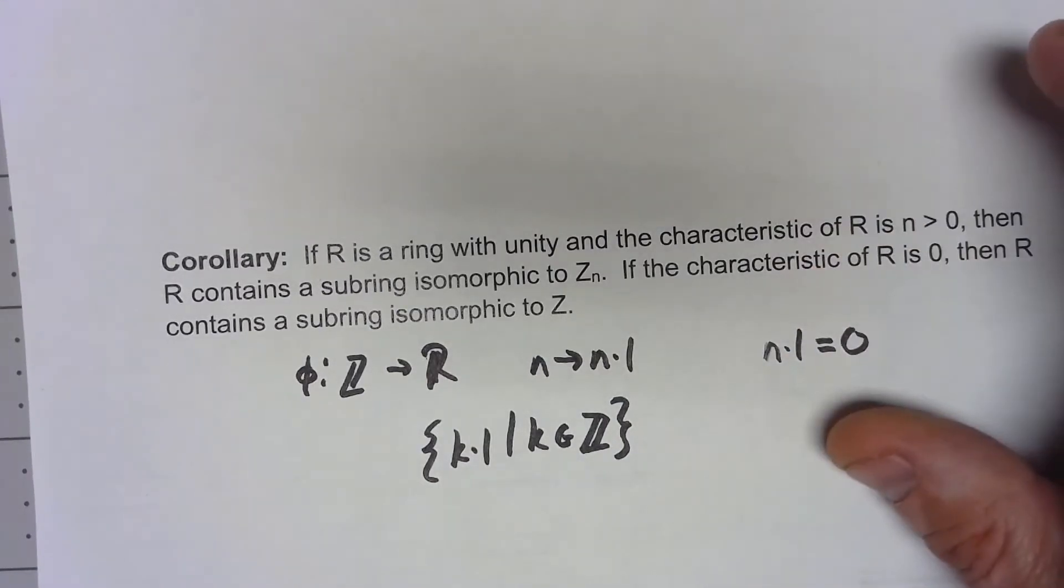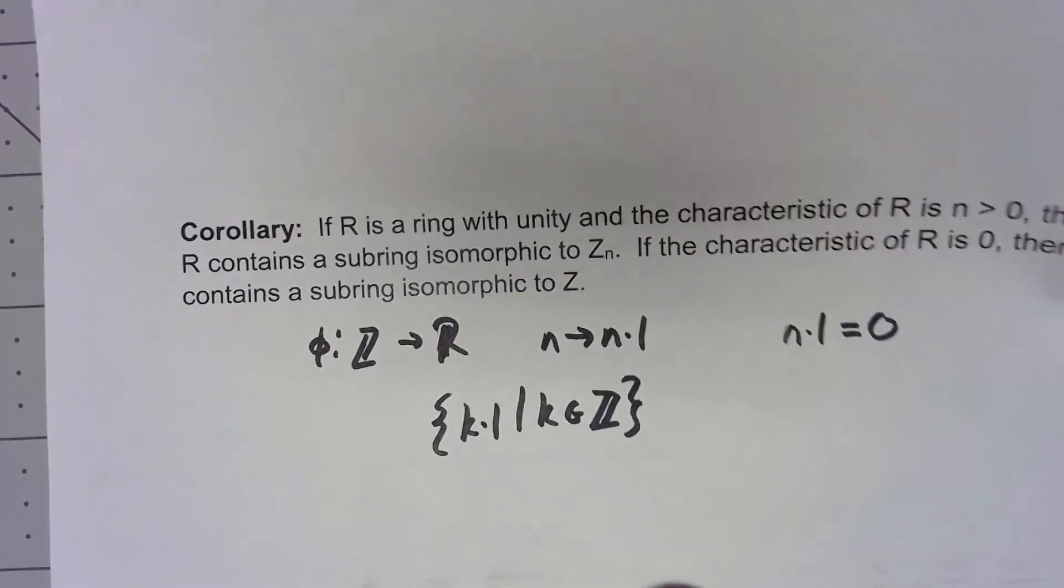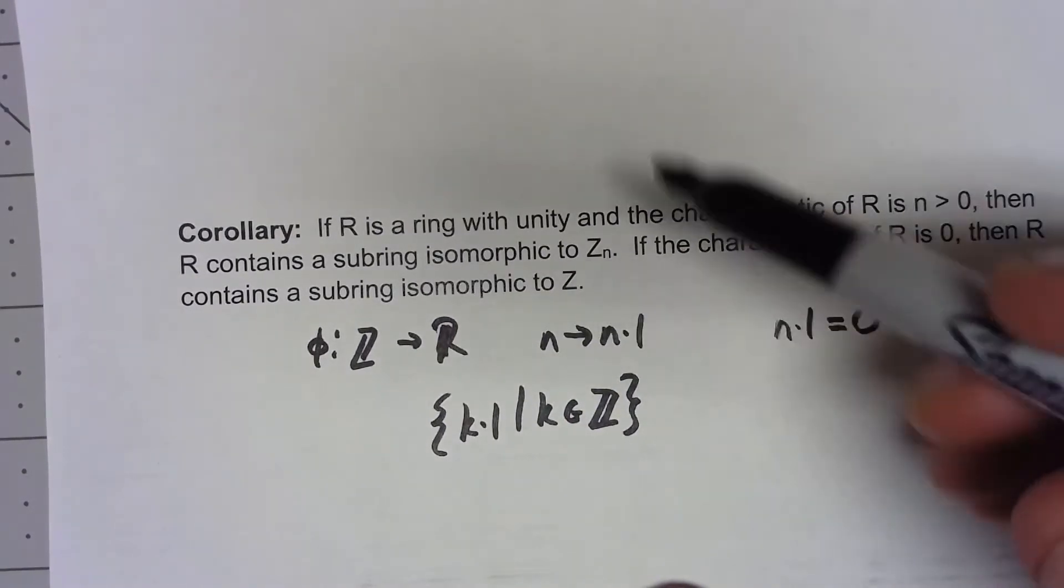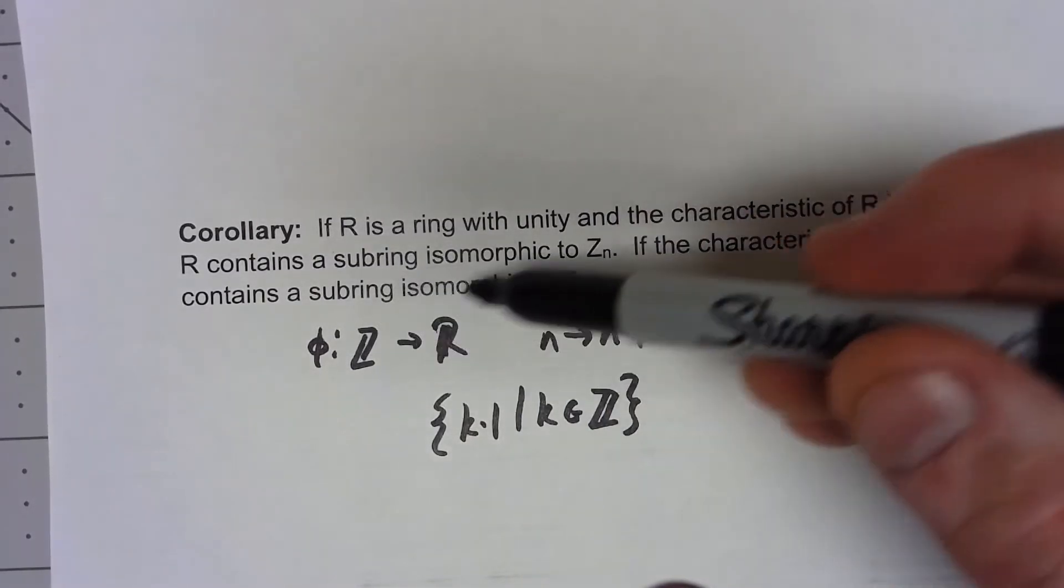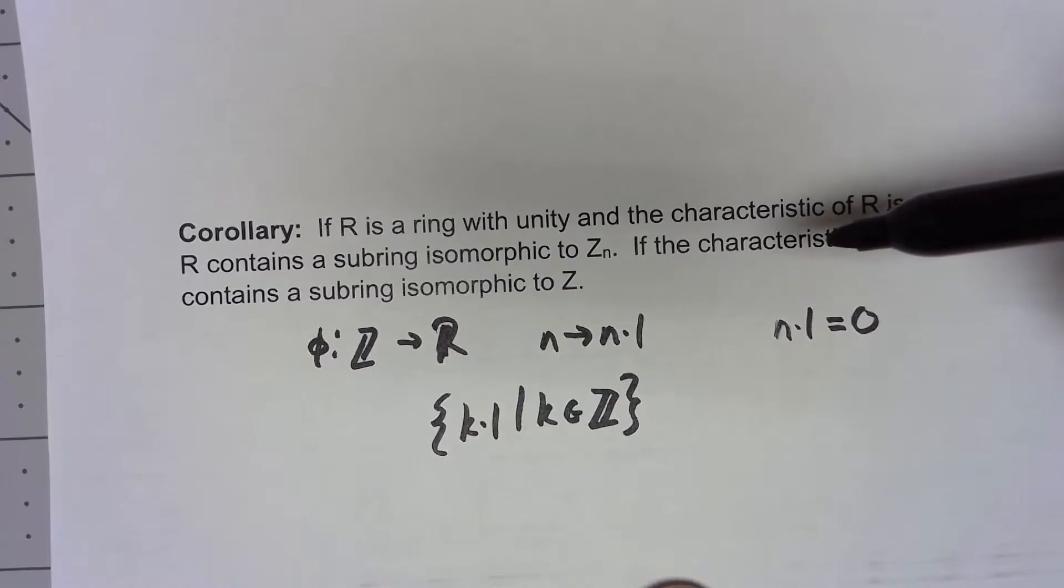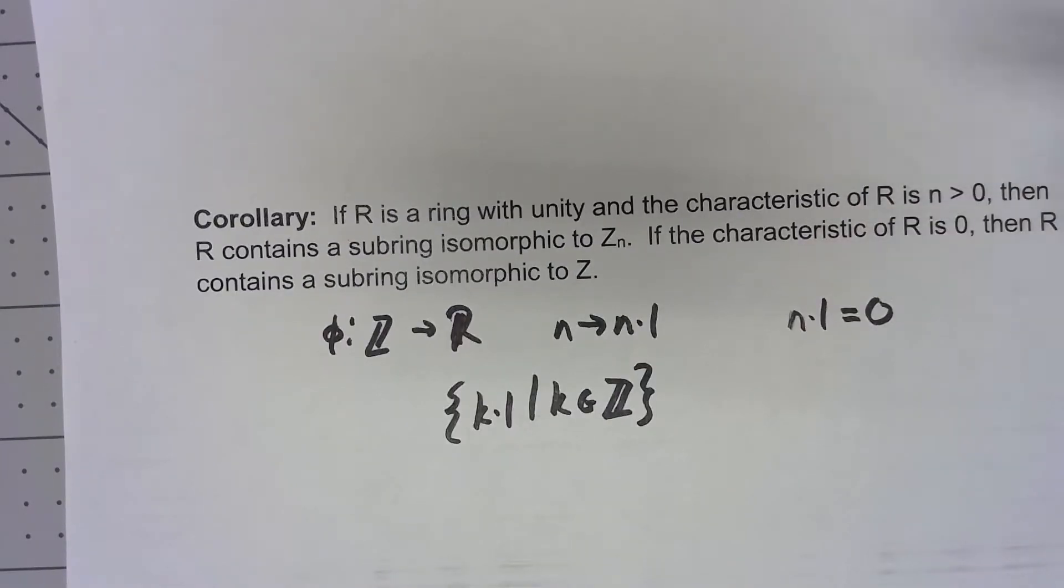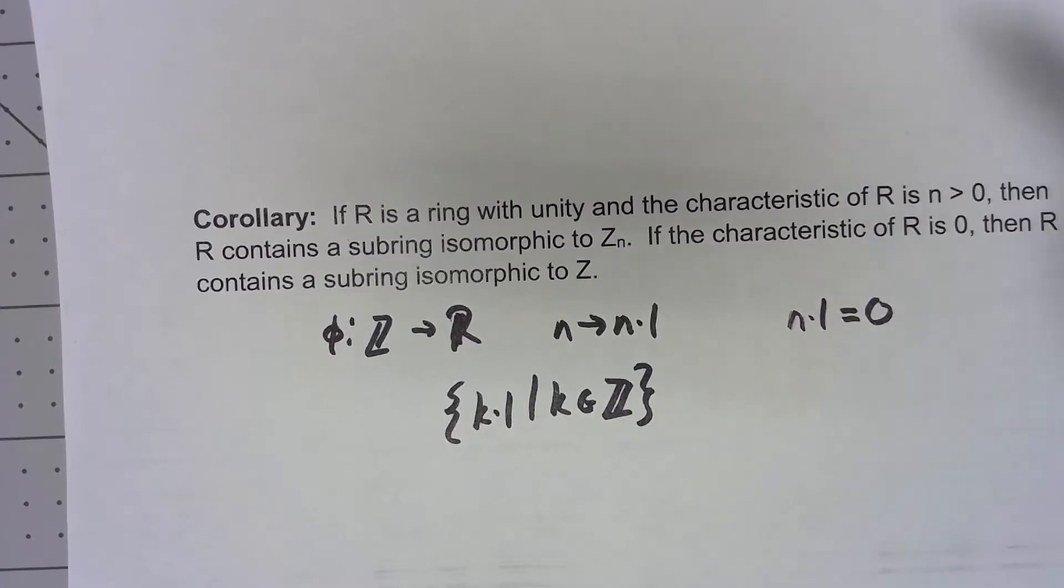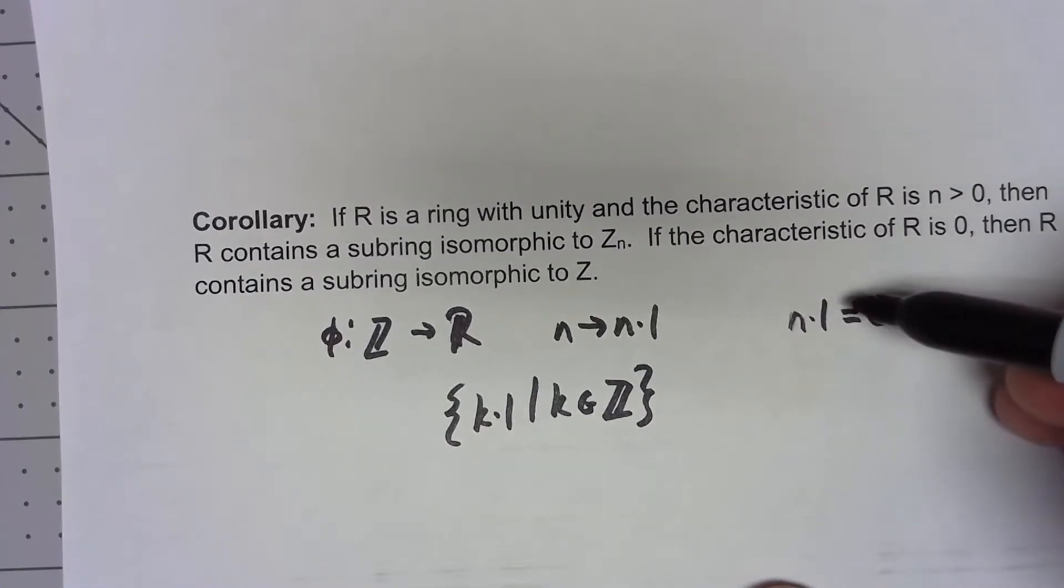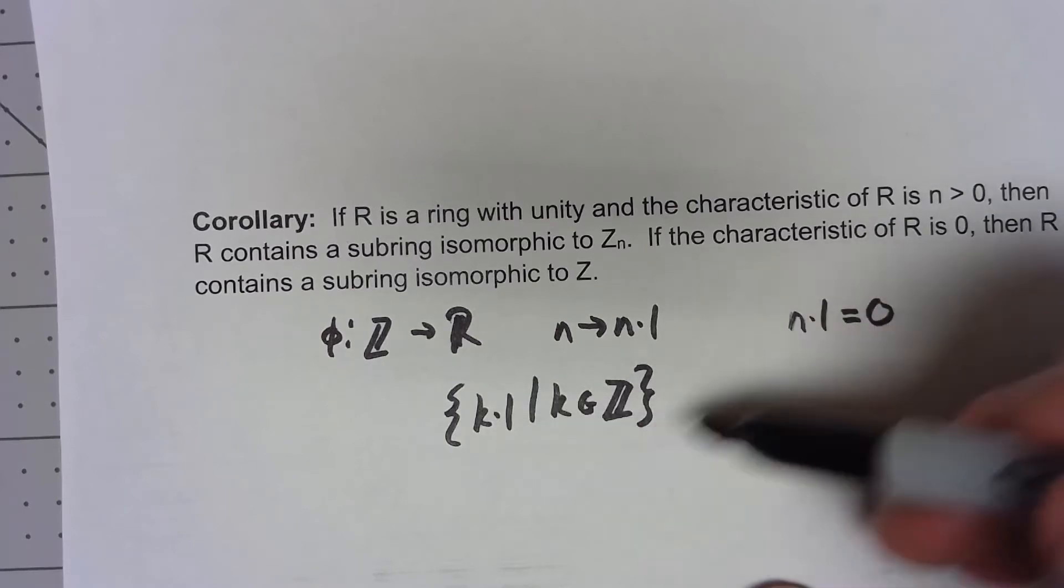Okay, now showing it for that if the characteristic is 0 then it contains the subring isomorphic to Z is, well, basically the same thing. This same thing now is the characteristic is never going to come around and so just the simple mapping is going to have to be an isomorphism.